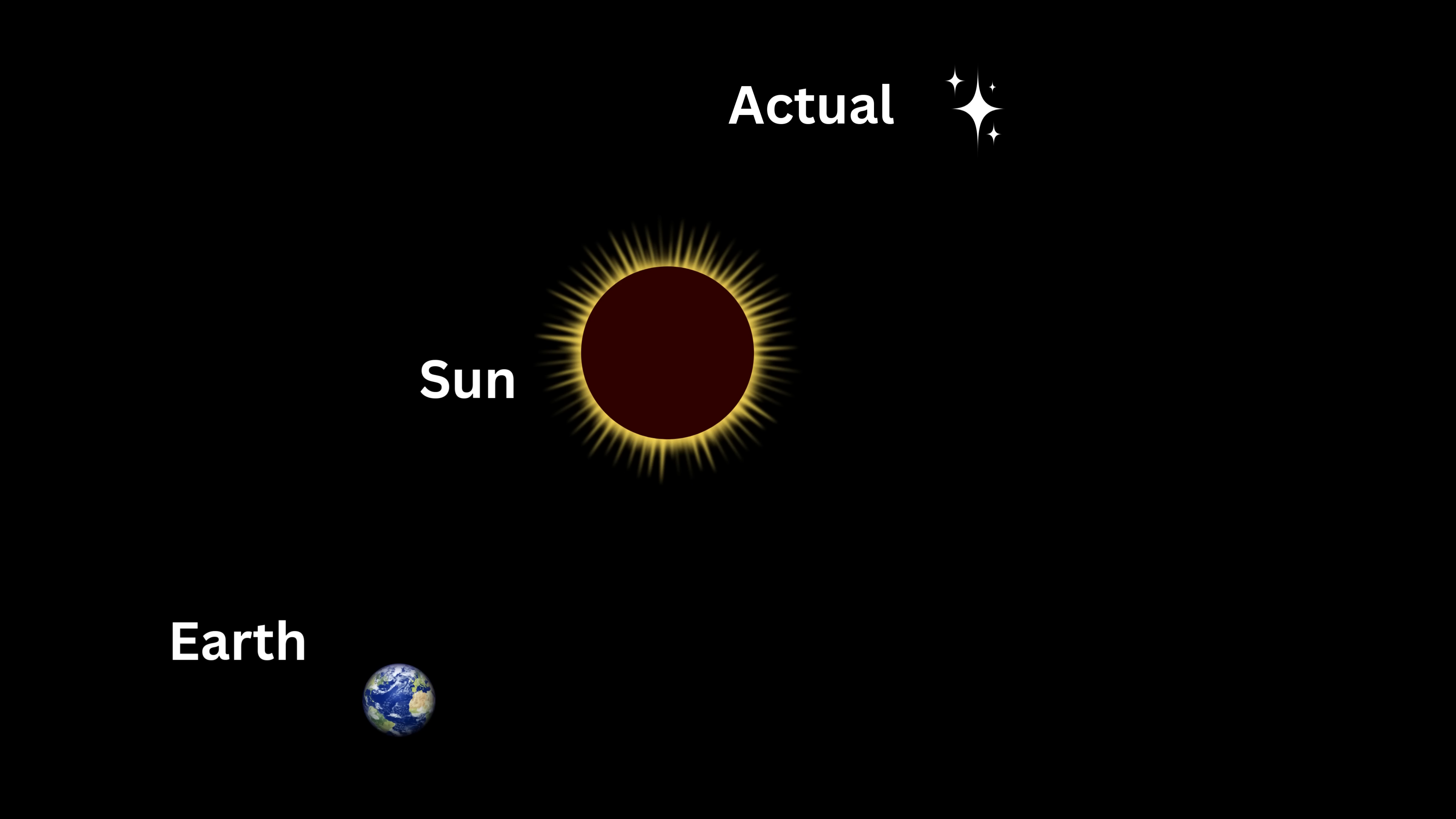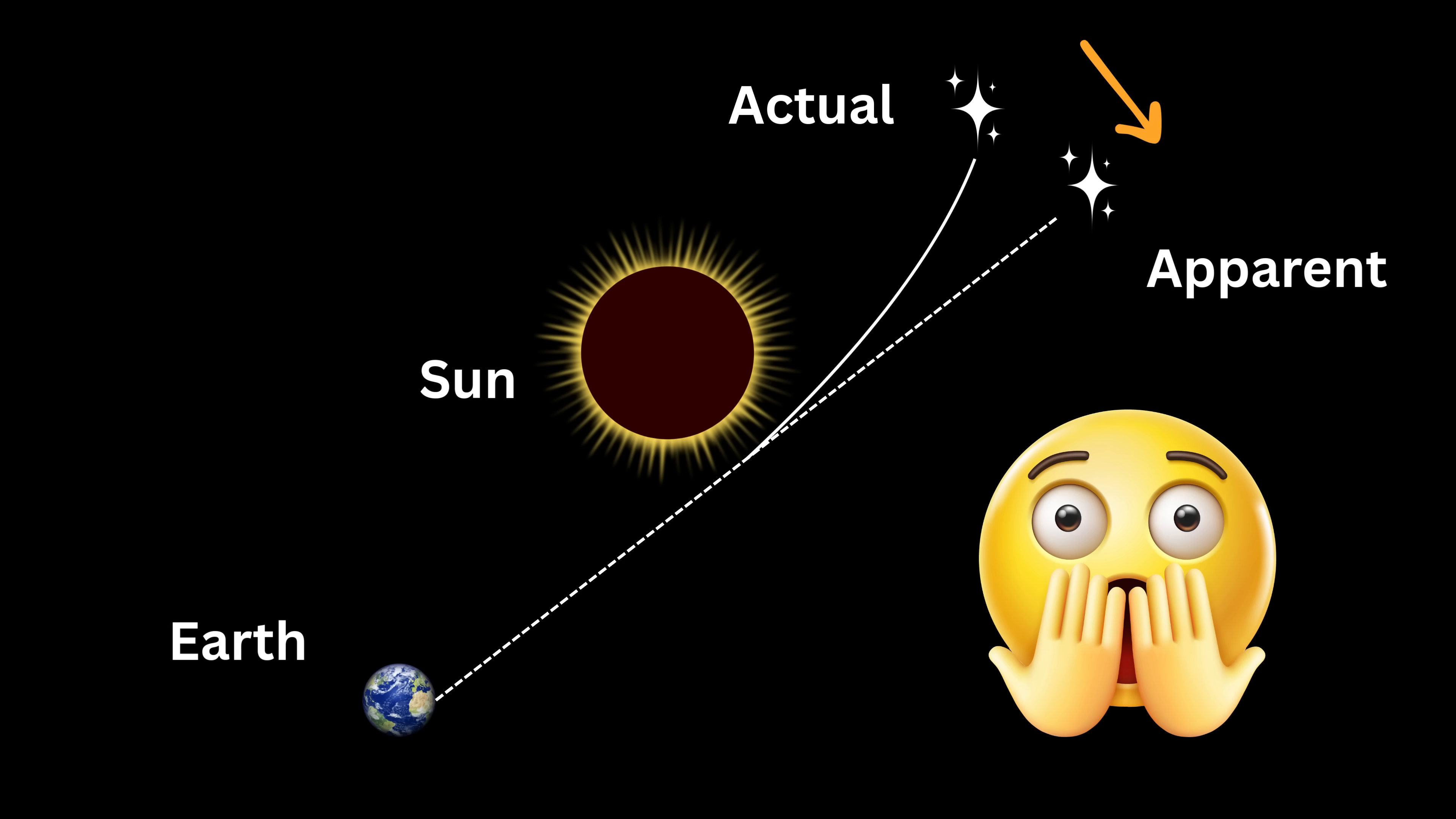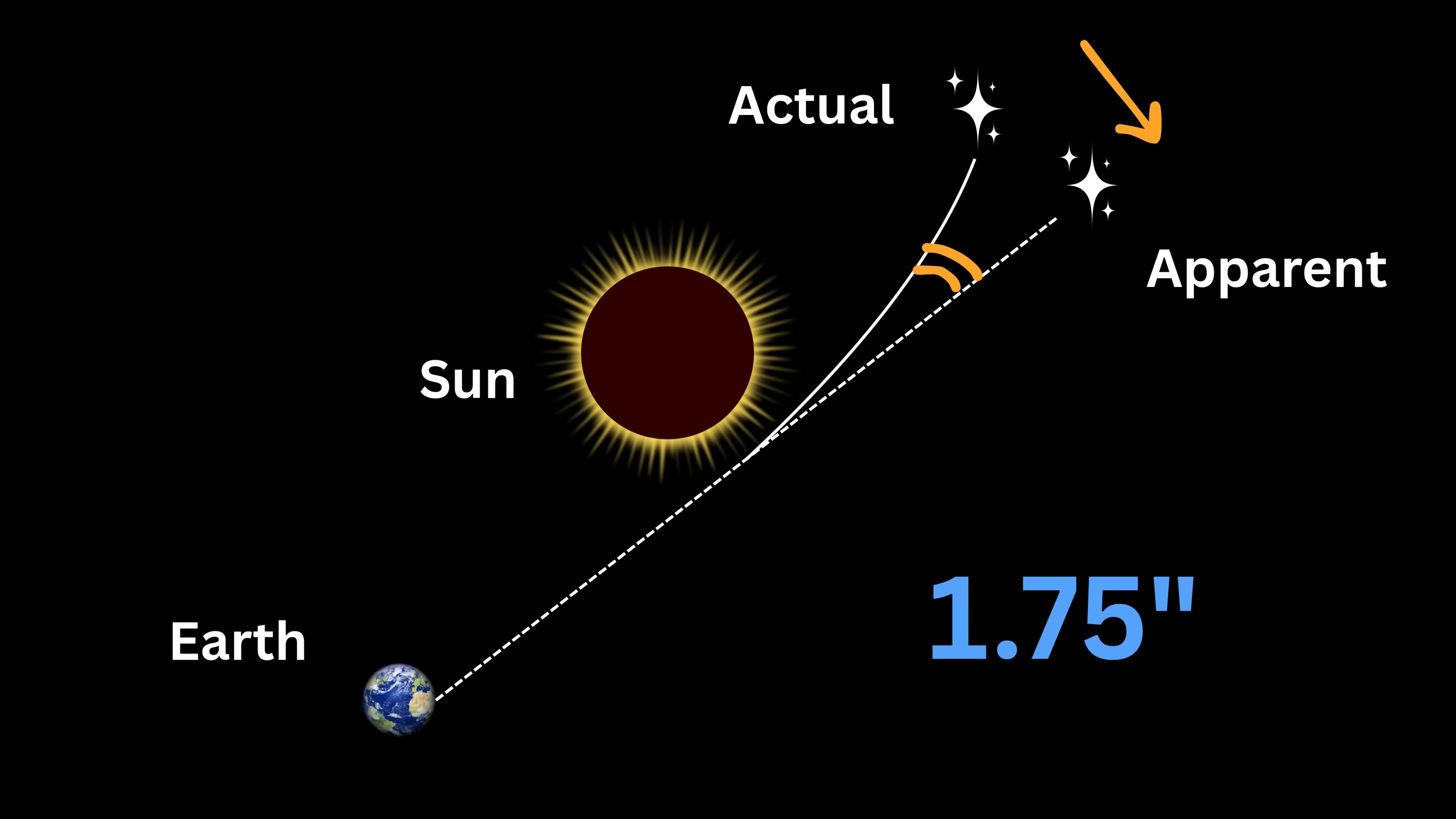Einstein's theory had said that the sun's mass should bend the space around it, and since light follows the curves in space, the light from those background stars should appear slightly shifted, as if the stars had moved a little. And when the photographs were developed and analyzed, that's exactly what they found. The stars did appear slightly displaced from their usual positions, and the amount of shift matched Einstein's predictions perfectly.